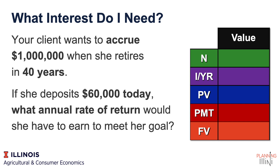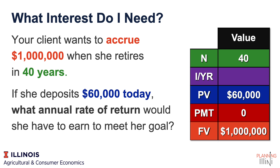To solve this problem, we need to find four variables and then use the calculator to solve for the fifth. We start with our client wanting to accrue a million dollars when she retires. That puts us at a future value goal of a million, so we have a million bucks in there for FV. She's going to retire in 40 years, so we can put 40 for N. She has $60,000 today, so we'd say $60,000 PV. We notice there are no additions or subtractions on an annual basis to this corpus, so payment remains zero.